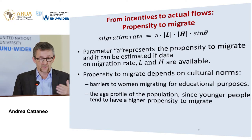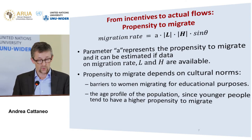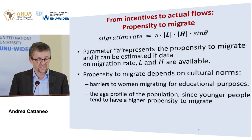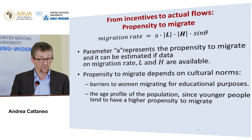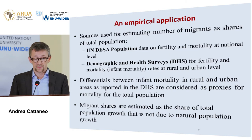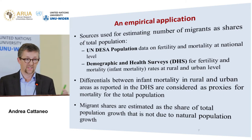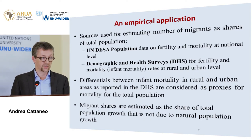Going from incentives to actual flows, we can estimate the propensity to migrate. Based on rural and urban poor and non-poor distribution data, the propensity to migrate captures cultural norms, barriers to women migrating, and the age profile of the population — since younger people tend to have a higher propensity to migrate. This is a preliminary empirical application using UN population data and DHS information on fertility. We calculated migrant shares as a proportion of total population growth not due to natural population growth, accounting for differentials between rural and urban areas.